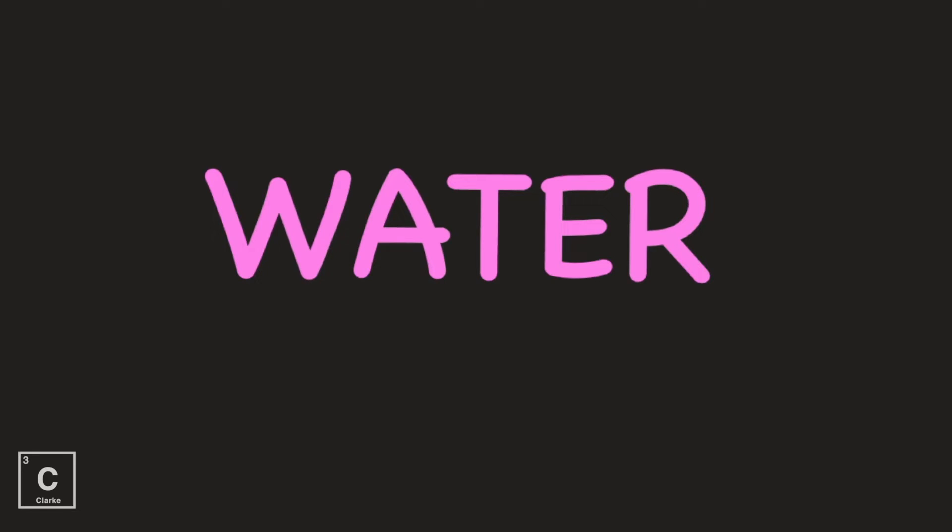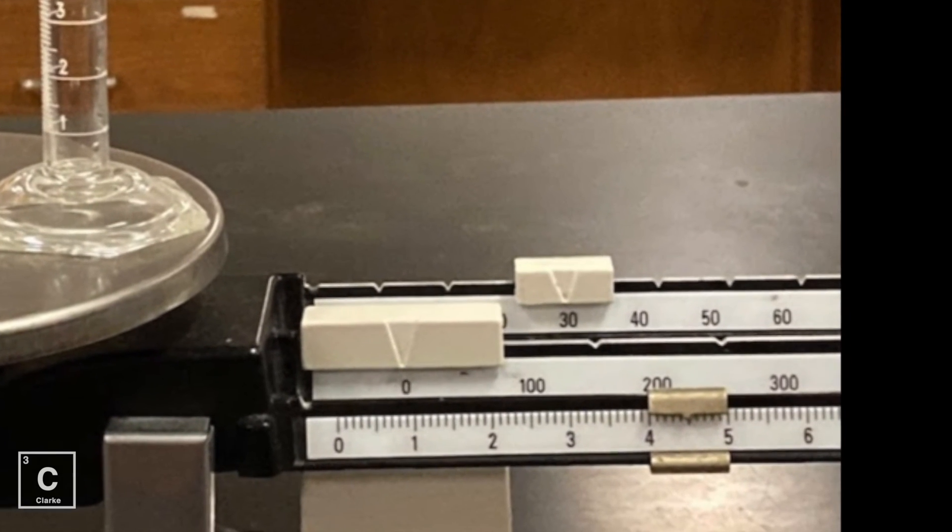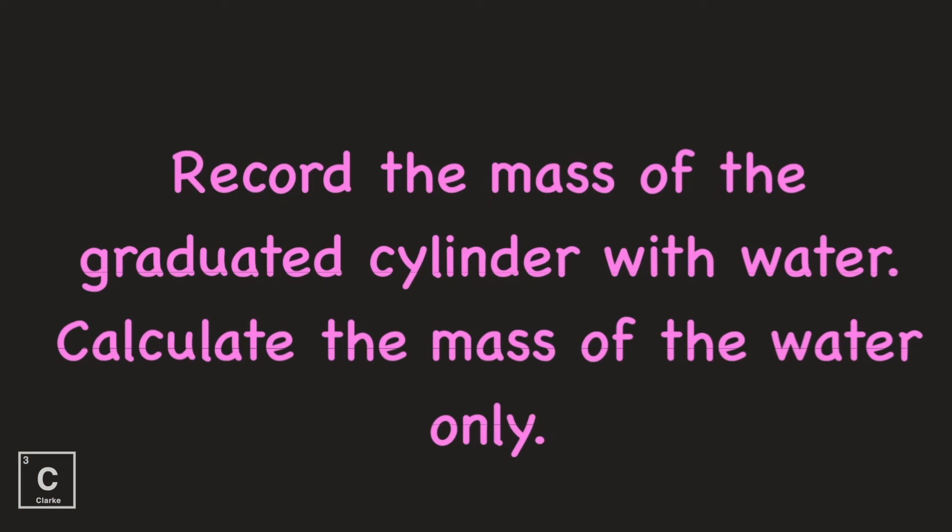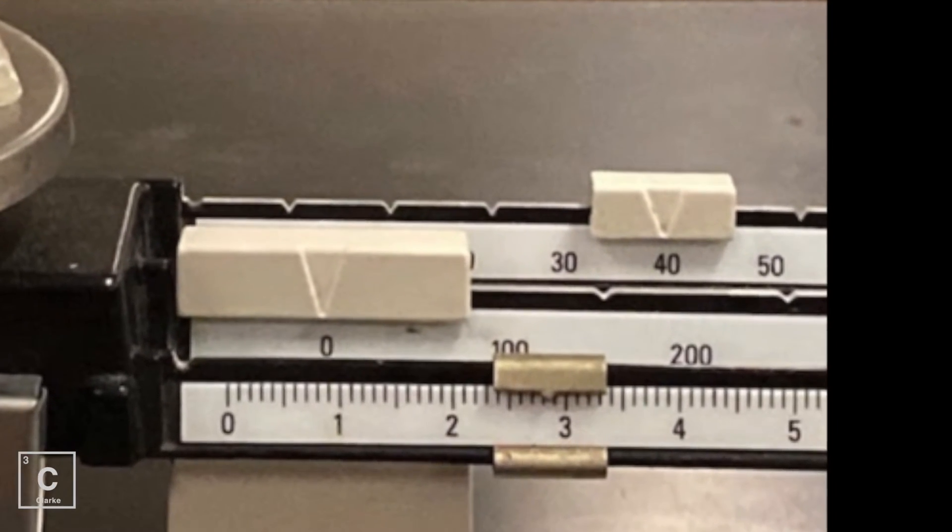Okay, the third substance that we're going to find the density of is water. So its measurements are coming up next. Record the mass of the empty graduated cylinder. Record the mass of the graduated cylinder with water. Calculate the mass of the water only. Again, think about sig figs. Record the volume of the water in the graduated cylinder.